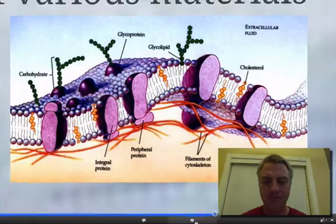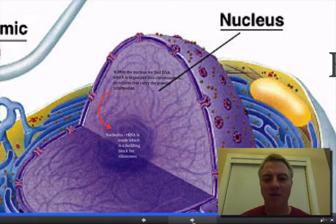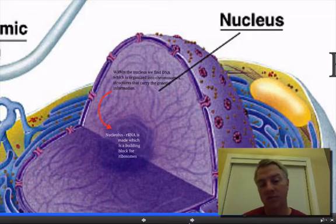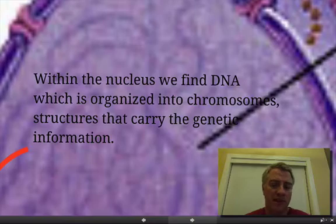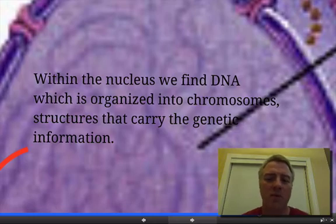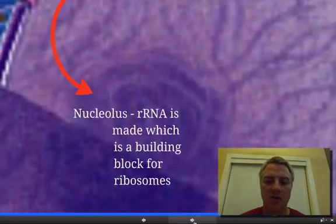The next structure we want to talk about is the big daddy of all — the nucleus. It's kind of like the brain of the cell. It's the most obvious, most conspicuous part of a cell. When you look at a cell under a microscope, you'll clearly see the big nucleus. The nucleus is where we find DNA — all the DNA you have is found in the nucleus, usually in the form of structures called chromosomes. DNA and chromosomes carry all of your genetic information — the blueprints of how to make you — and they are all housed inside the nucleus.